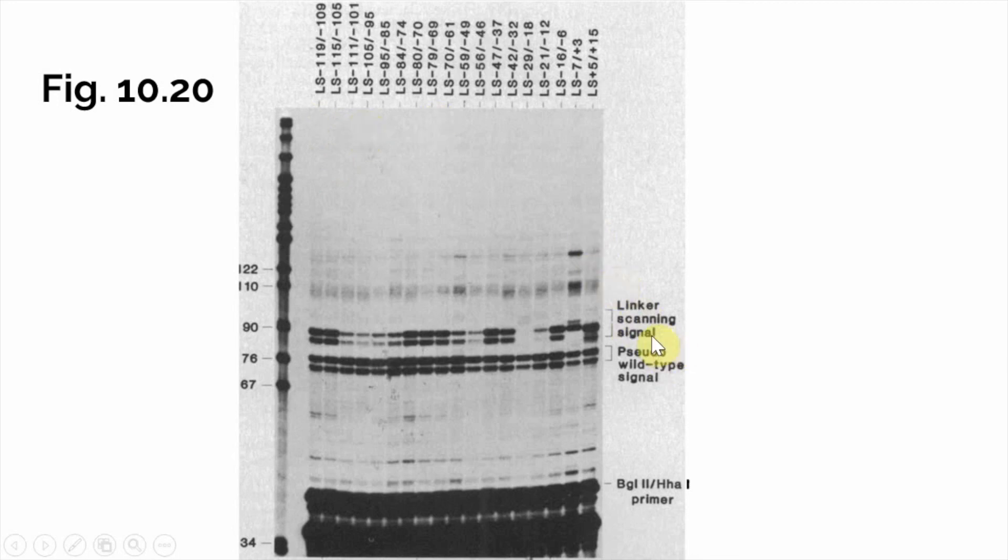Right here we have our linker scanning DNA signals, our experimental ones. Below that we have our pseudo-wild type or control signals. Then down here we have primers and a lot of other junk that just did not anneal to the mRNA in the primer extension assay. Since this is not important to our data, we're just going to ignore it.